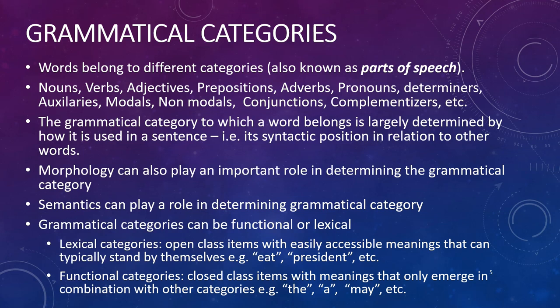For example, I could teach you some new nouns right now, such as 'jabberwocky,' or I could teach you some new verbs: 'gaia' and 'gimbal.' Lexical categories also tend to have distinct meanings that you can perhaps look up in the dictionary. So for instance, if you looked up the word 'cat' in a dictionary, you'd probably be able to find some kind of meaning associated with it.